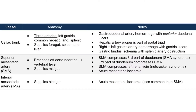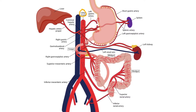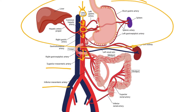Arterial structures for the GI system are super important and have many clinical tie-ins. For that reason, we will dive into more details on the celiac trunk, the superior mesenteric artery, and the inferior mesenteric artery. As the aorta descends, it gives rise to the celiac trunk, then further down to the superior mesenteric artery, and further down from that to the inferior mesenteric artery. Let's zoom in on the celiac trunk.